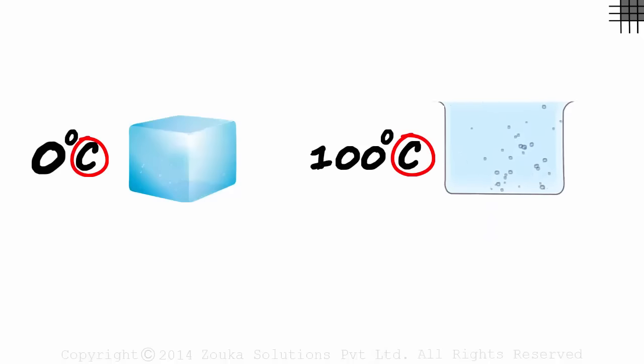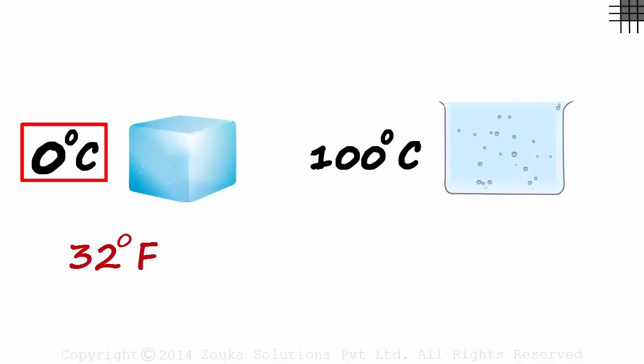Though Celsius is a more common way to measure temperature, Fahrenheit is also sometimes used as its unit of measure. Zero degrees Celsius is the equivalent of 32 degrees Fahrenheit.